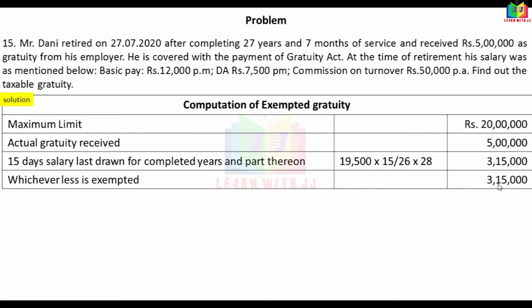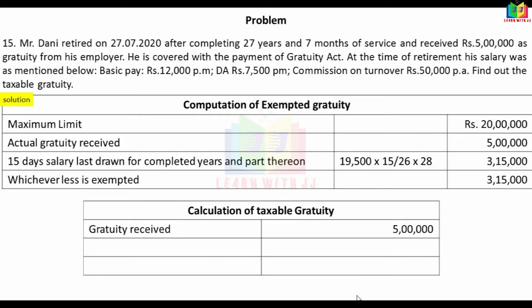The least of the three amounts is Rs. 3,15,000, so that is the exempted amount. Gratuity received is Rs. 5,00,000 and exemption is Rs. 3,15,000. Therefore, taxable gratuity = 5,00,000 − 3,15,000 = Rs. 1,85,000.